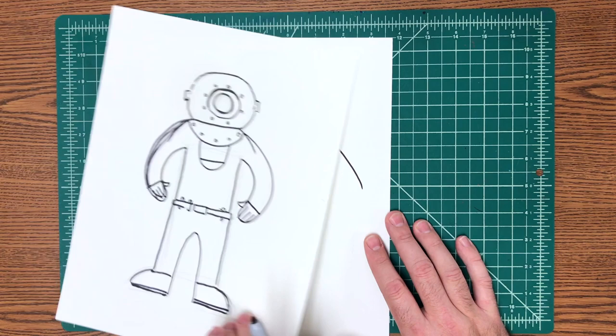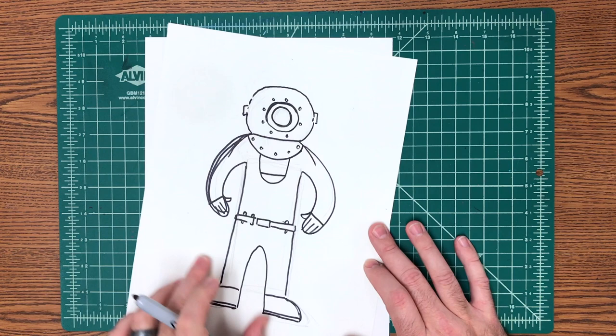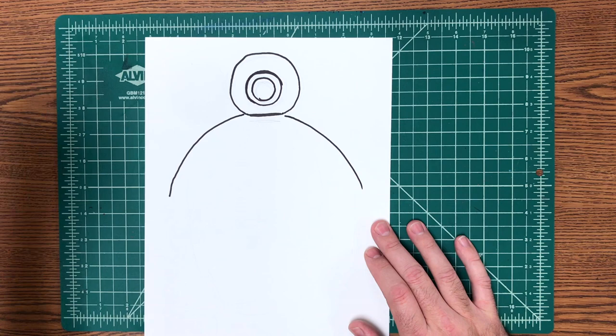Next is going to be the body. To draw the body we're actually going to have to find where the armpits are, and then I want to draw kind of a rectangular shape. If you look at this, I make a rectangular shape just like so.